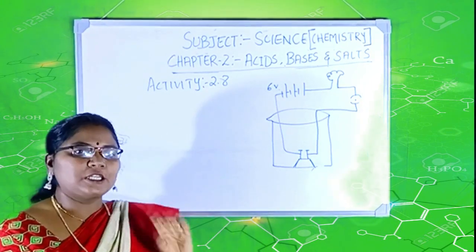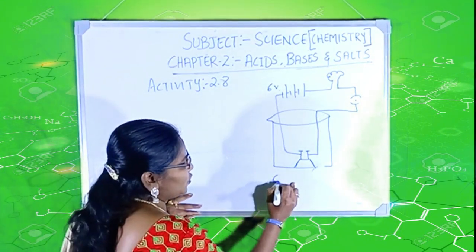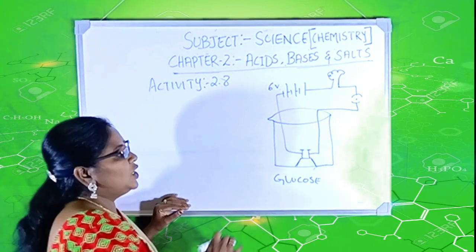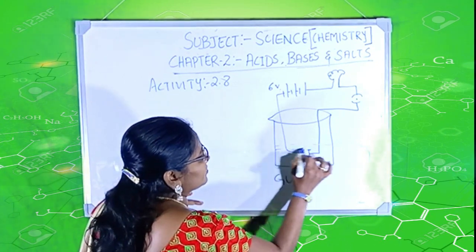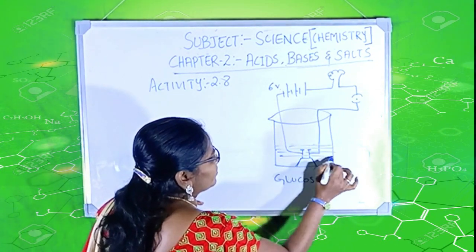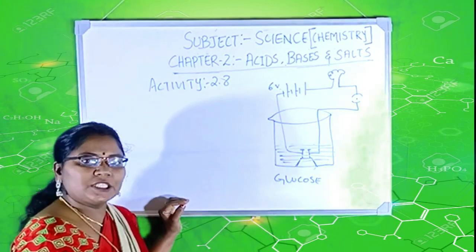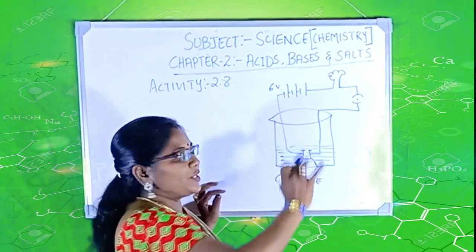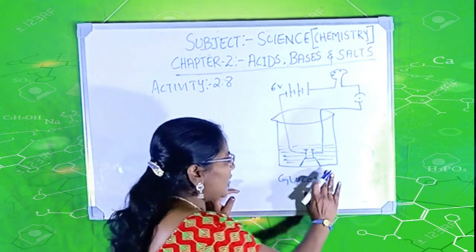Now, with this, we have to take four solutions. One is glucose. First, fill this beaker with a glucose solution. When we fill this with a glucose solution, you can see that the bulb never glows when you switch on. The bulb never glows.